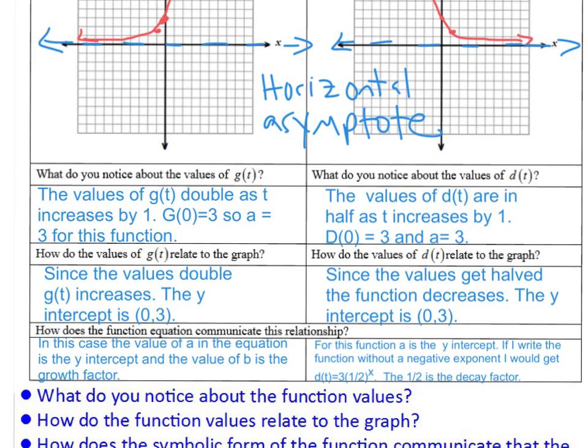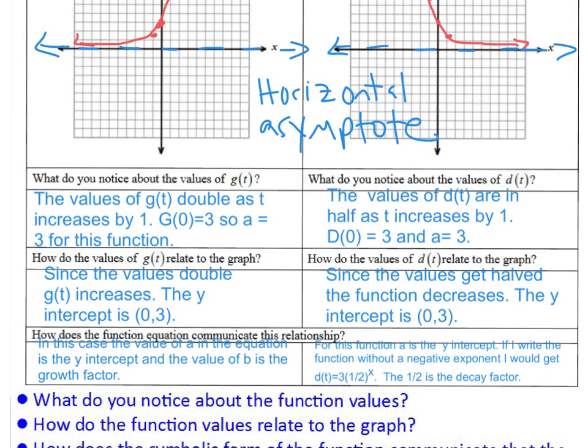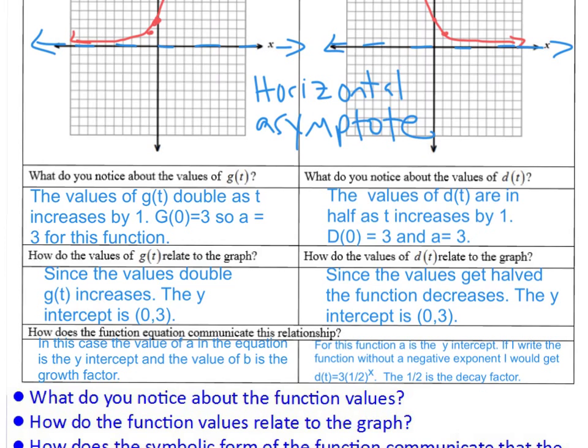And I very specifically want to talk about what did you notice over here for the d of t function. So for d of t, if we look back up at the original function, it was 2 to the negative t. So actually, this should be a t in my answer, not an x. And the negative exponent, we know, moves that number to the denominator, which is how I would get this 1 half, it moves the 2 to the denominator. Well that 1 half is the decay factor, the values are decreasing by a half each time, they're getting halved. And if you look at the y-intercept from the graph, that matches the a value in your equation both times, that 3 and the 3. And the doubling matches the b value in your equation, or the 1 half matches the b value in this equation.